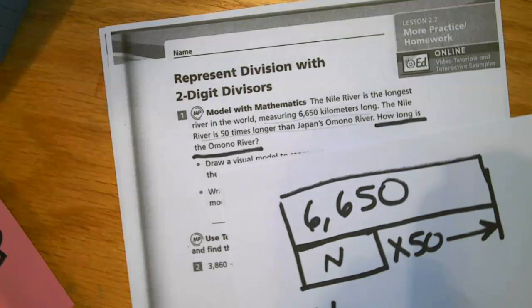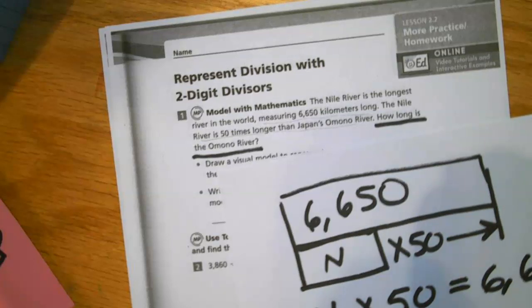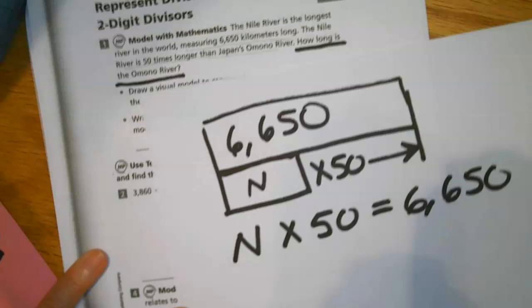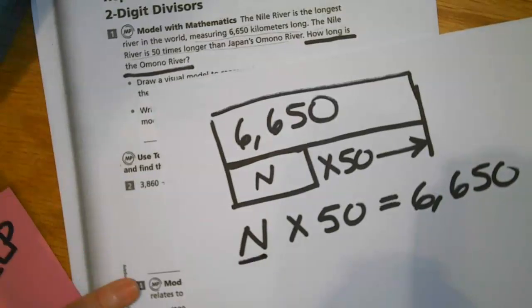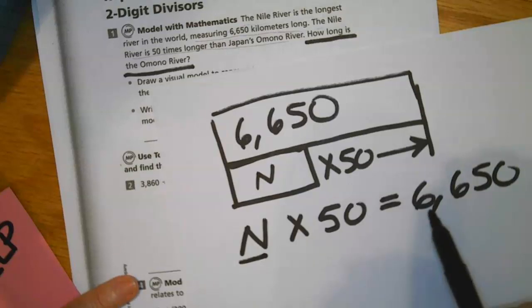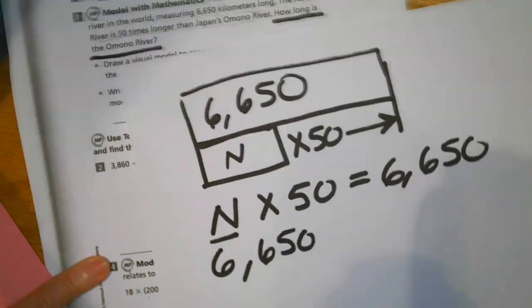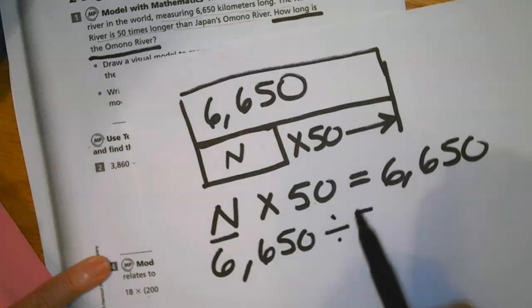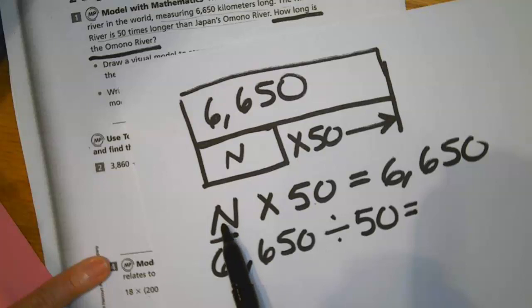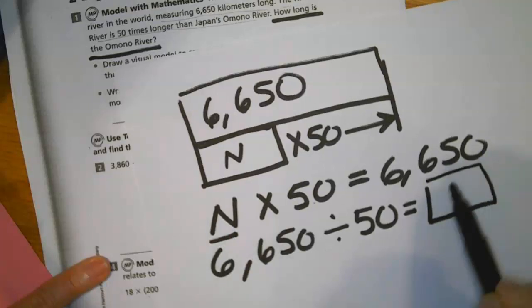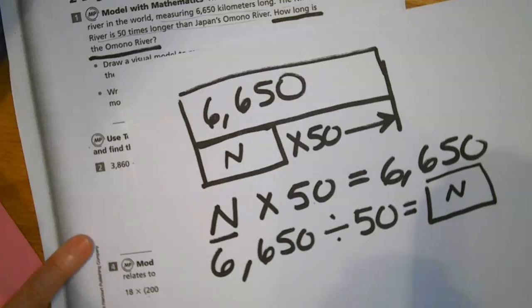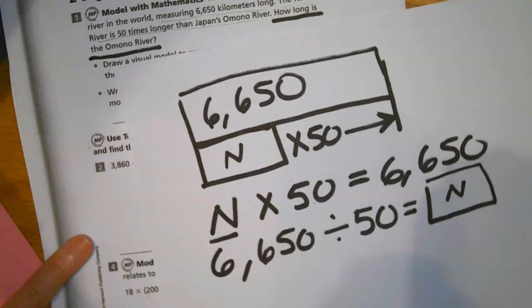So I know I can write a multiplication problem for this particular bar model, and then I can also write a division problem to find this missing factor. I know I can take this product and write it as my dividend, divide it by the factor that I do know, and my quotient will be equal to this other factor, which is what I am looking for. So the problem we have here is to find the solution to 6,650 divided by 50, and then I will know the length of the Amano River.